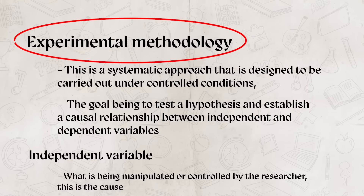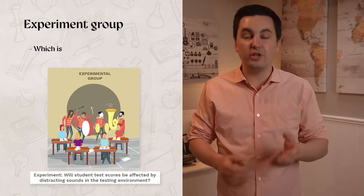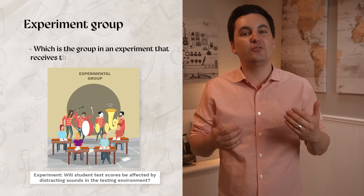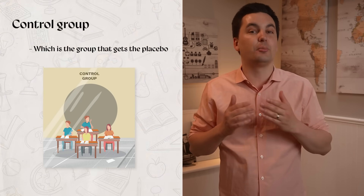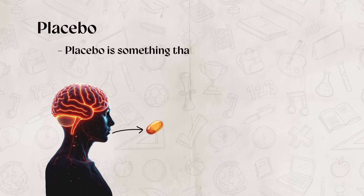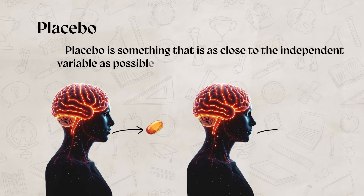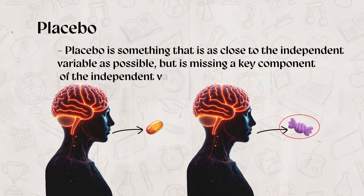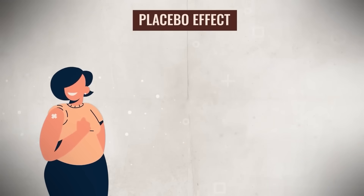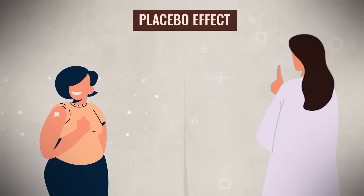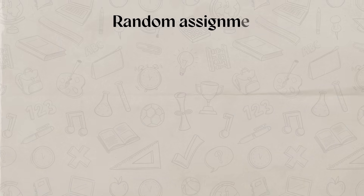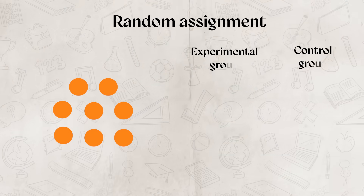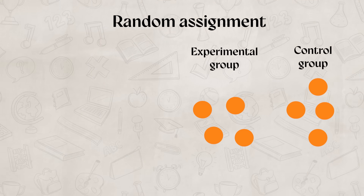Experiments following the experimental methodology have an experimental group, which is the group that receives the independent variable, and a control group, which is the group that gets the placebo. A placebo is something that is as close to the independent variable as possible, but it is missing a key component of the independent variable, so it does not impact the participant, but also does not let the participant know they are not receiving the treatment. Researchers use random assignment to determine who is placed in the experimental and control group.